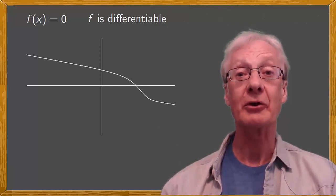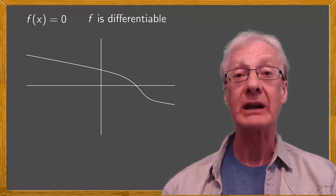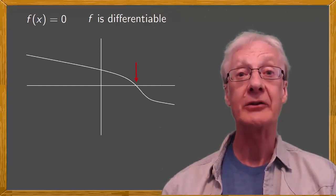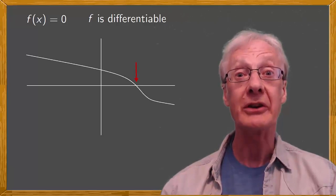We'll assume that the function f is differentiable and that this is its graphical representation. To solve f of x equals 0, we're looking for the points where the function intercepts the x-axis. How can we do this?